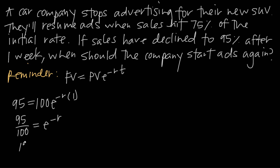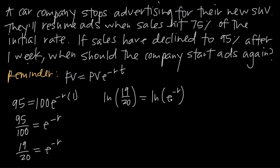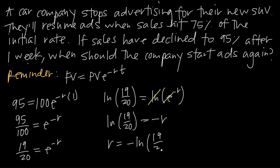We can simplify 95 over 100 to 19 over 20, so we have 19 over 20 equals e to the negative r. We take the natural log of both sides: natural log of 19 over 20 equals the natural log of e to the negative r. Whenever we take the natural log of the exponential function, the ln and the e cancel, leaving just the exponent. So natural log of 19 twentieths equals negative r. Multiplying both sides by negative 1 gives us r equals negative natural log of 19 over 20.